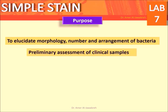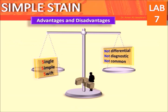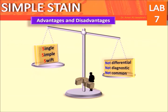Positively charged basic stains are attracted to negatively charged bacteria. Negatively charged acidic stains repel negatively charged bacteria. The purpose of simple staining is to elucidate the morphology, number, and arrangement of bacteria, and for preliminary assessment of clinical samples.